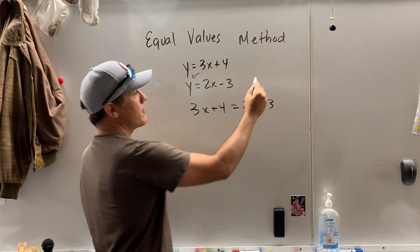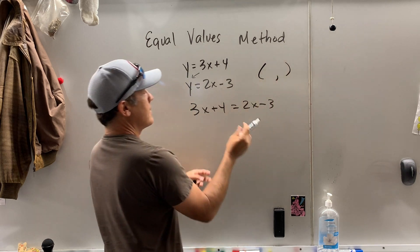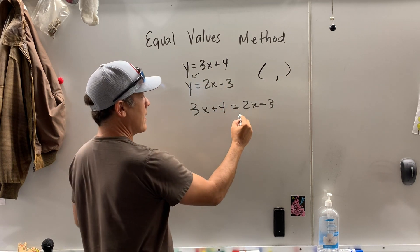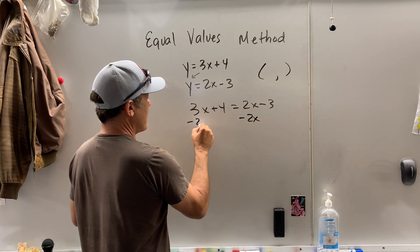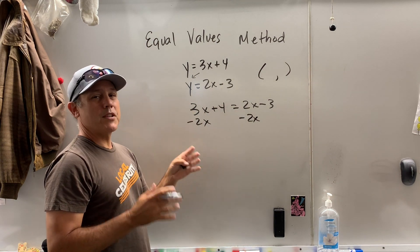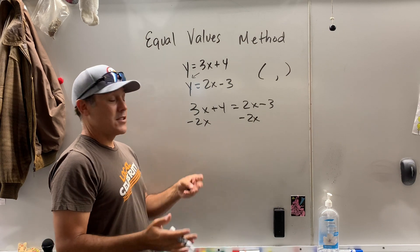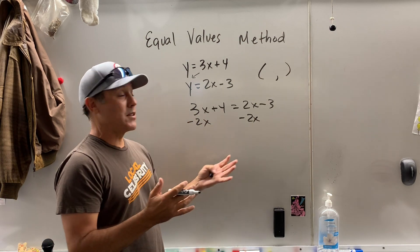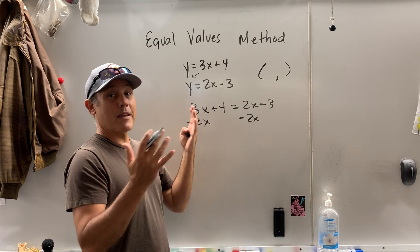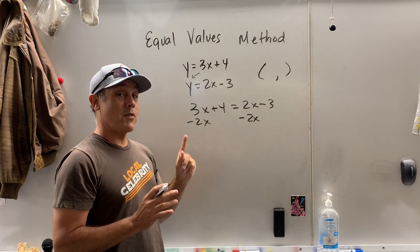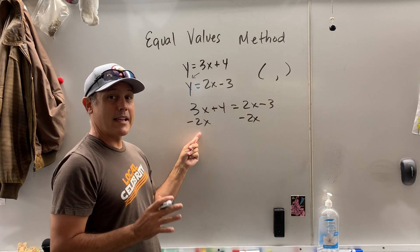Again, by the way, we're looking for an ordered pair that satisfies both equations. So if I subtract 2x, by the way, when you have variables on both sides, always move the smaller variable. You'll save yourself a lot of aggravation. I think some kids believe you always got to move the variable to the left. That doesn't make any sense to me. If you move the smaller variable, you'll never wind up with a negative variable.